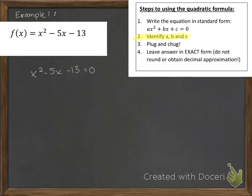So the next step says to identify a, b, and c. Well a is the number in front of x squared. Remember we're looking for ax squared plus bx plus c. So since there isn't a number there, we can see that a is 1. We can see that b is negative 5. And we can see that c is negative 13.